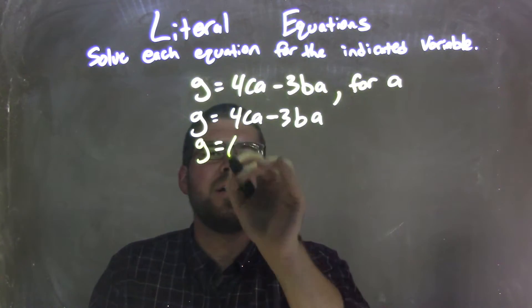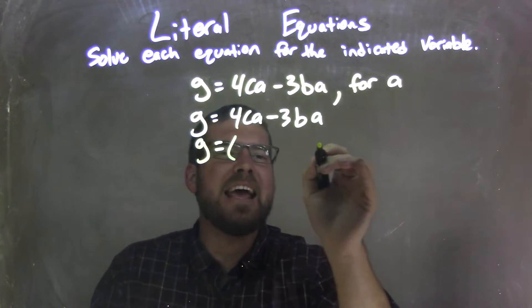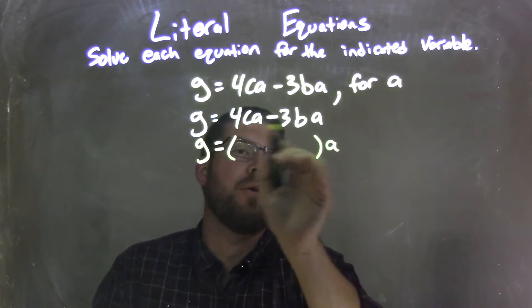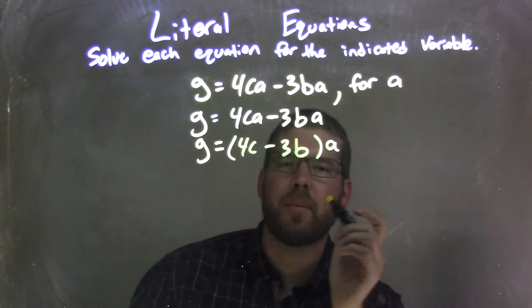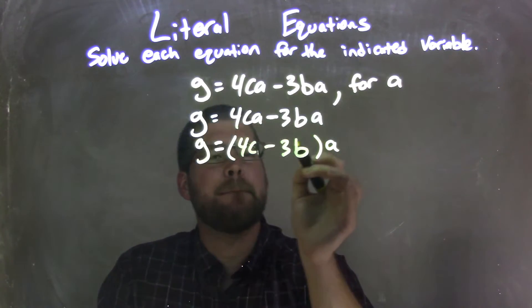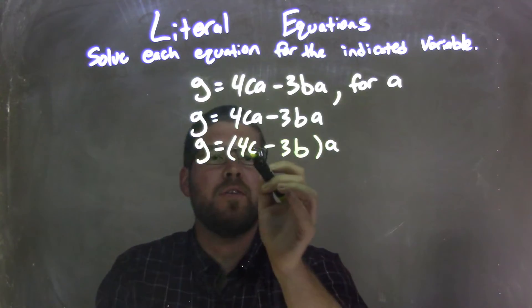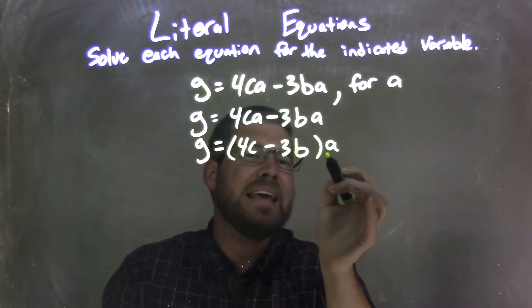So what I'm going to do is I'm going to take out an A from that, from both parts. Now we're left with a 4C minus a 3B. Now take a moment to think about that. If I multiply the A back into both parts, I'd get 4CA minus 3BA, right?